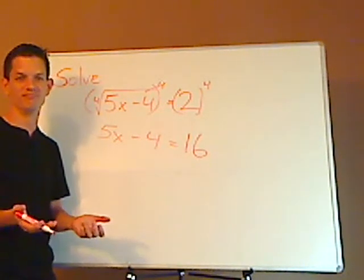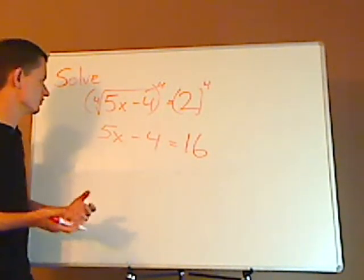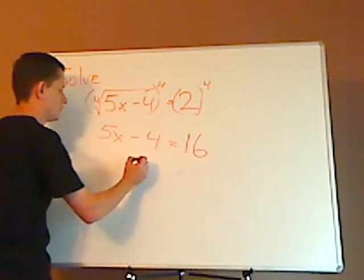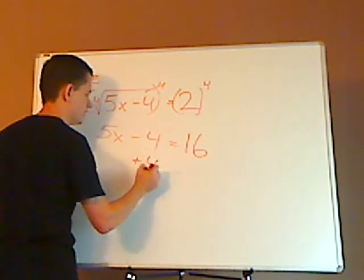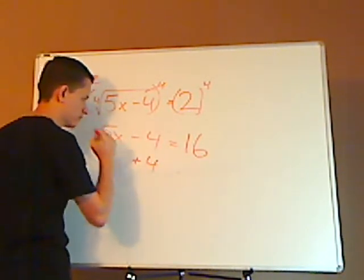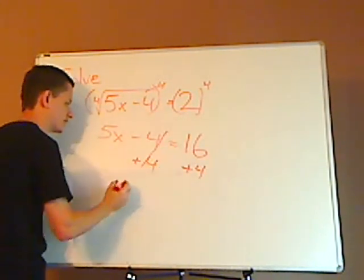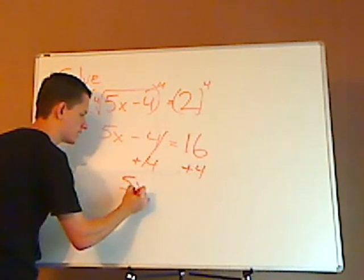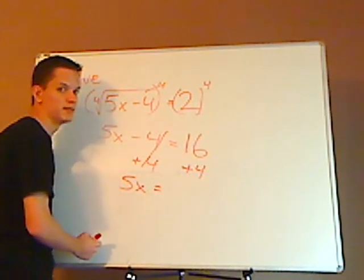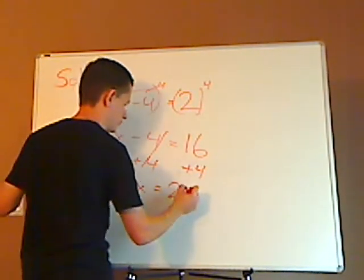Alright, so now it's easy, it's a linear equation, so now you just solve for x. You do the opposite - here it's minus 4, so you add 4 to both sides. That cancels out, leaving you with 5x equals 16 plus 4 is 20.